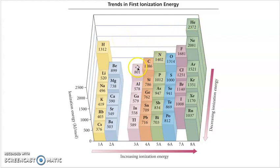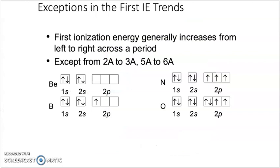But again, we see at 3A there's this little dip going from 2A to 3A, and then it goes back up. And then 5A, and then 6A, there's a dip, and then it goes back up. Why? That's why I love orbital diagrams. The orbital diagrams help explain that dip.